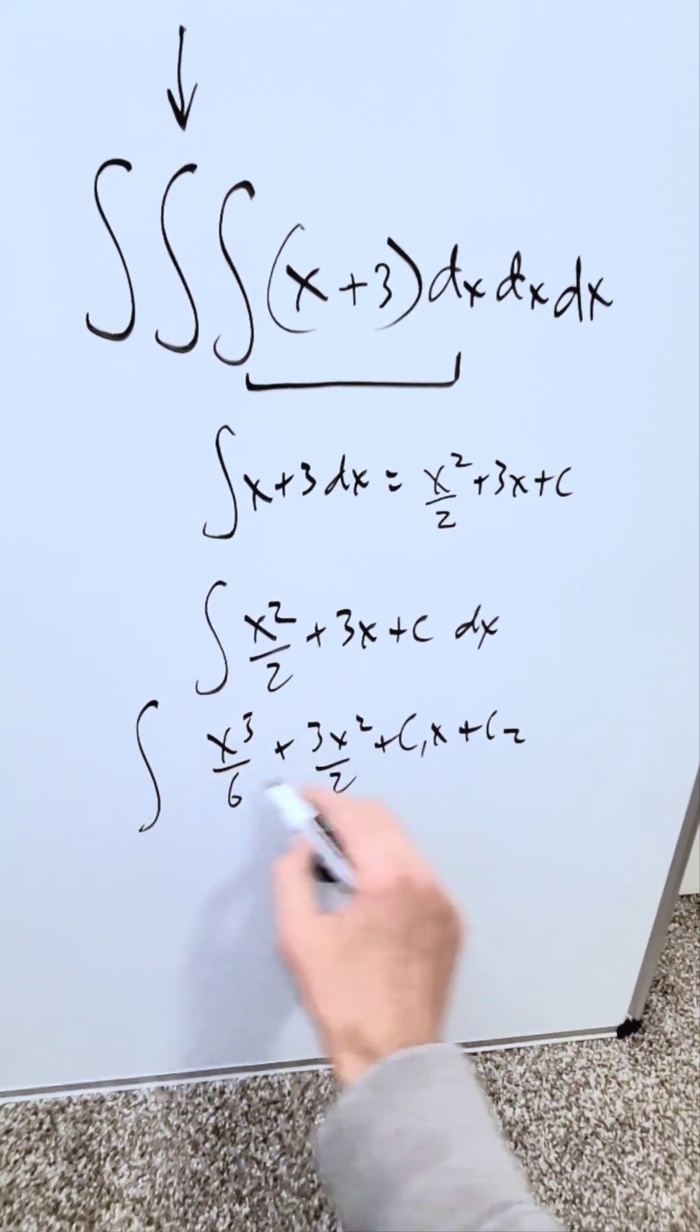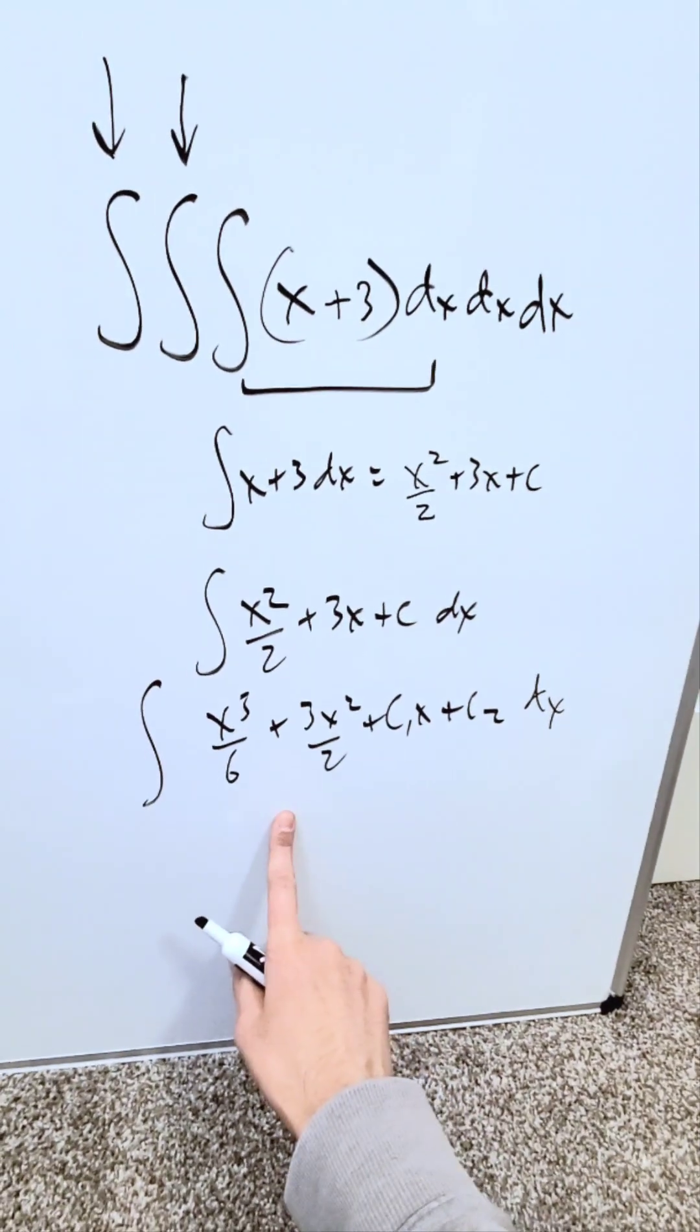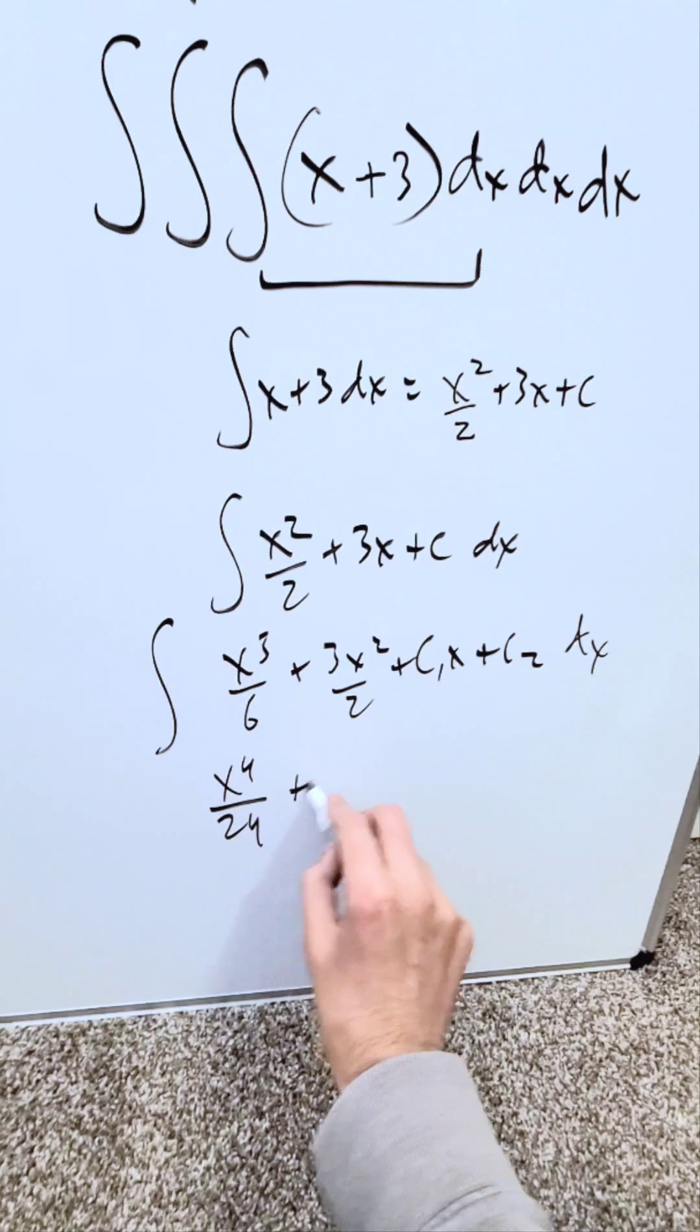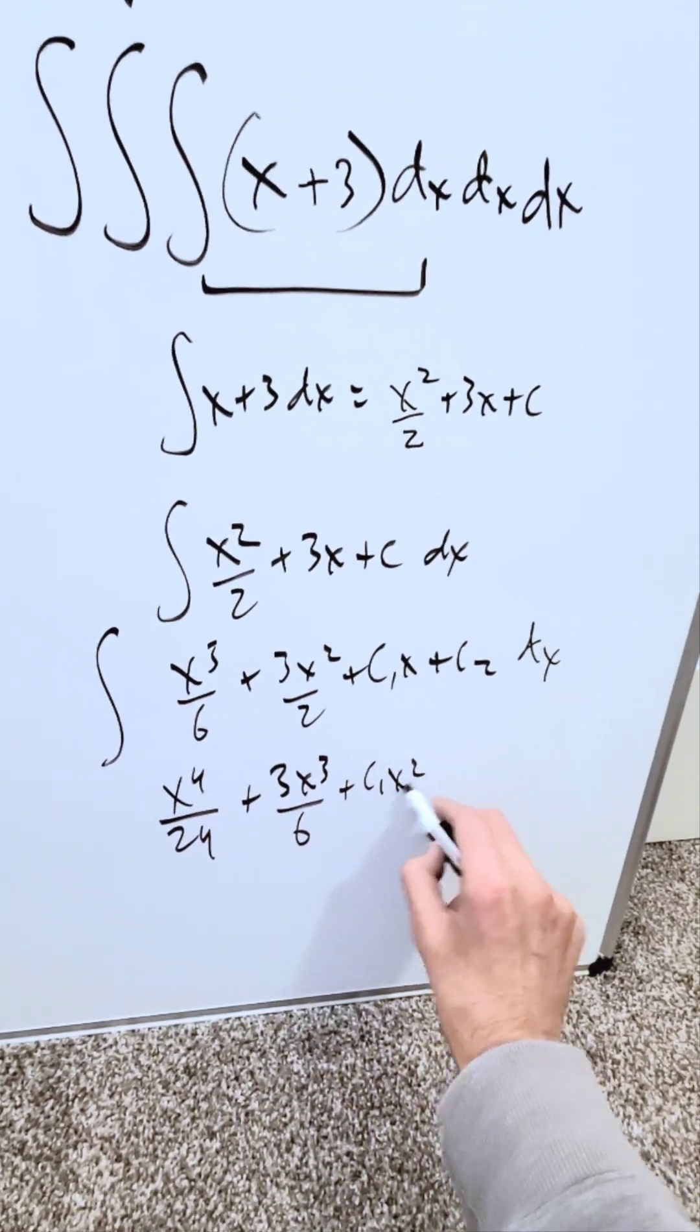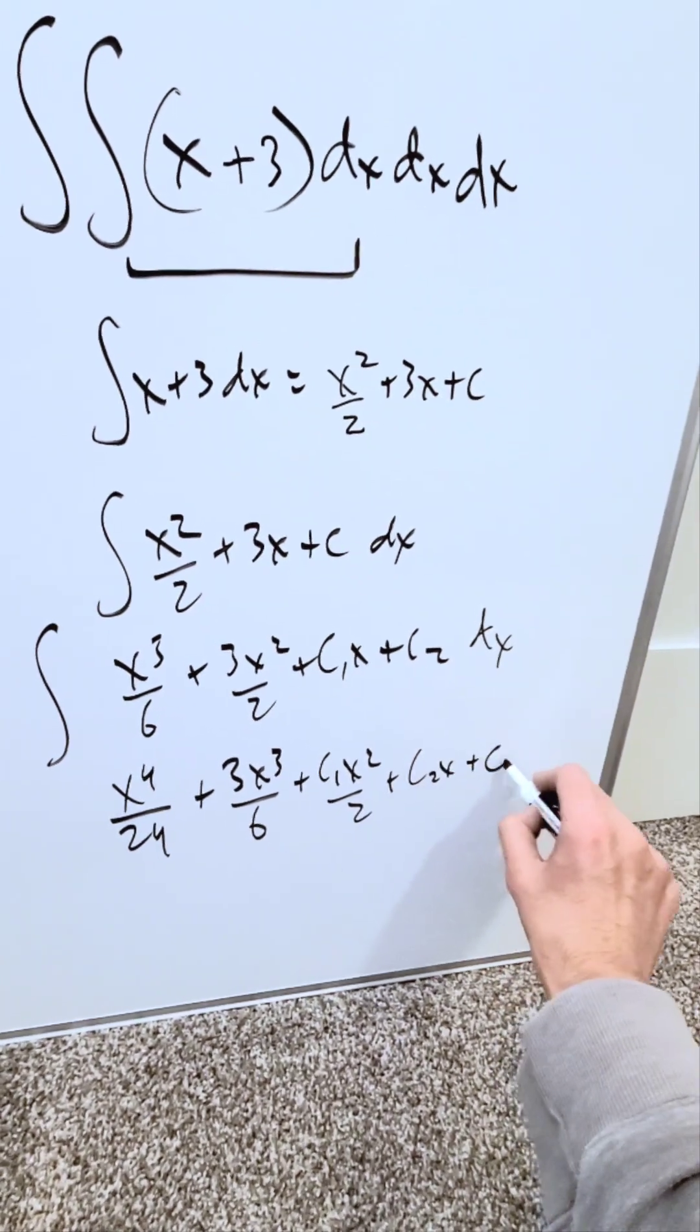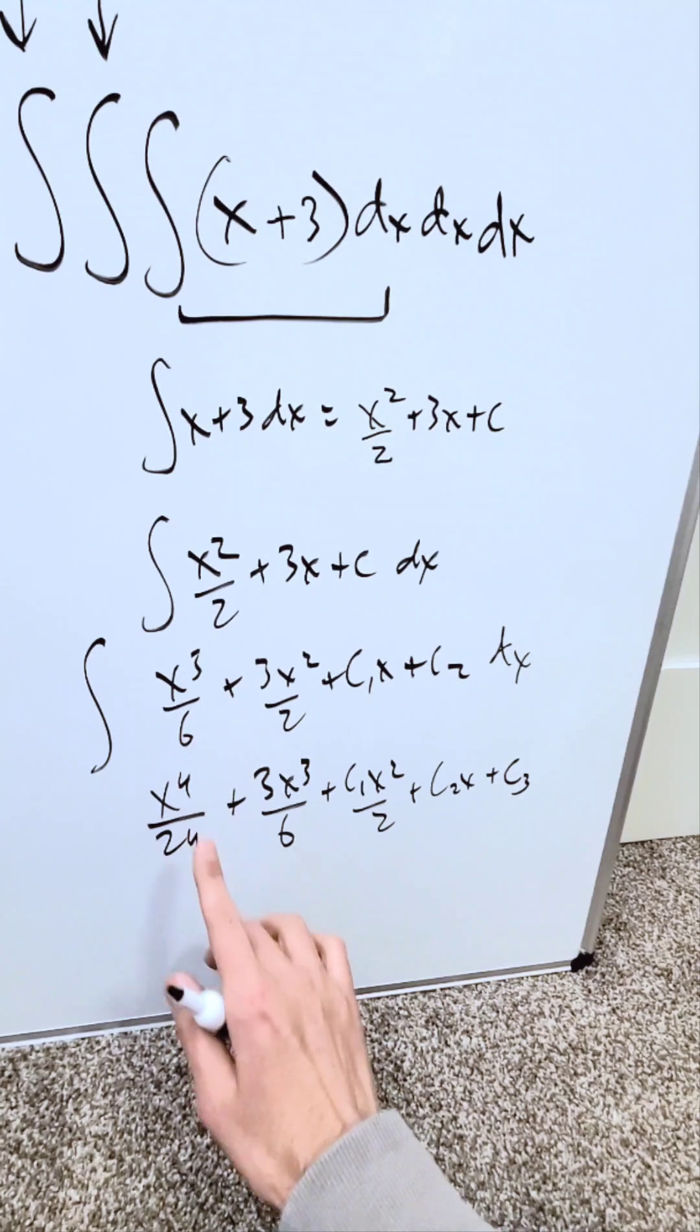which will become nested in yet another dx integral, which brings me right over here. Let's integrate this. I will have x to the power of 4 over 24 plus 3x cubed over 6 plus c1x squared over 2 plus c2x plus another constant of integration, c3. This is our end result of this triple integral.